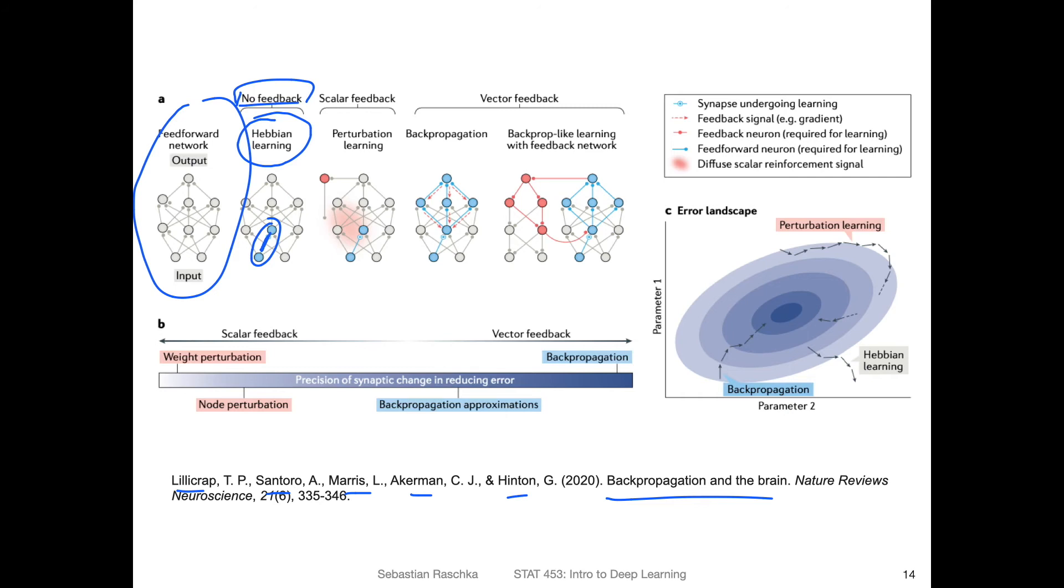So another type of learning is perturbation learning. So you make a perturbation, like you perturb a weight and see if it's better or not, if it's better, then you keep the weight, otherwise you discard it. It's also not very efficient, this is actually very very slow.